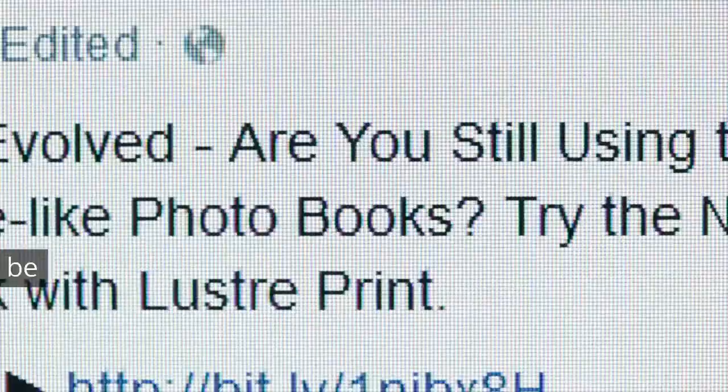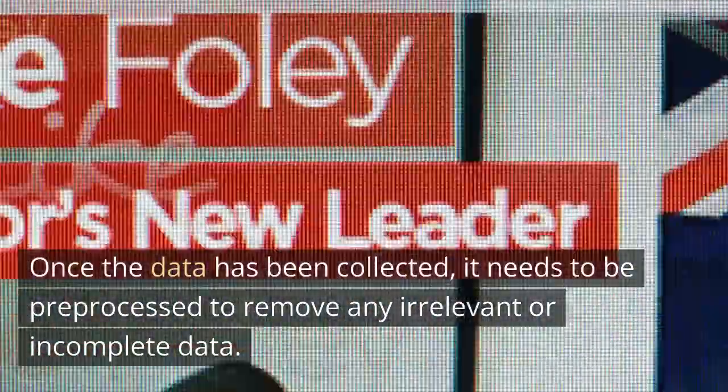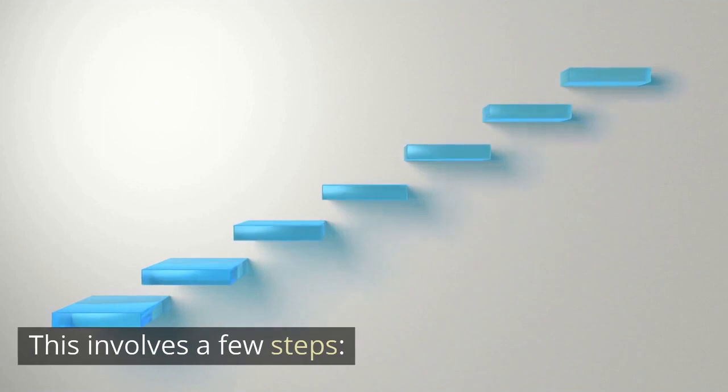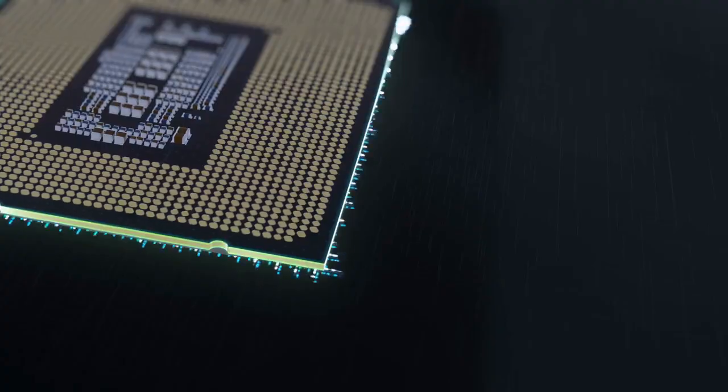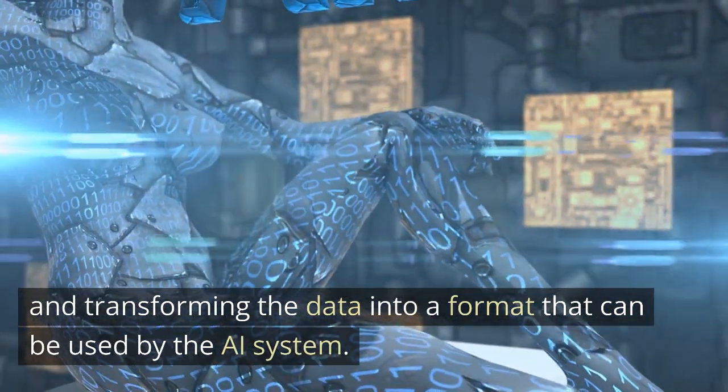Pre-processing. Once the data has been collected, it needs to be pre-processed to remove any irrelevant or incomplete data. This involves a few steps. Cleaning, organizing, and transforming the data into a format that can be used by the AI system.